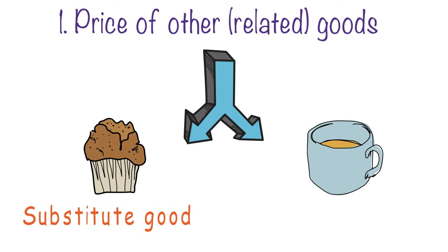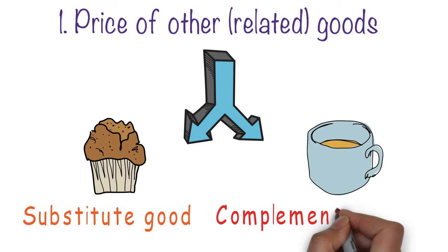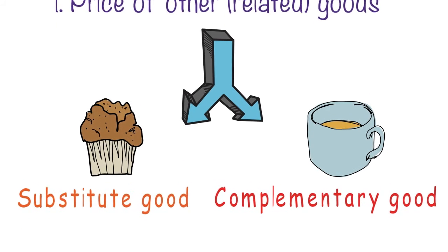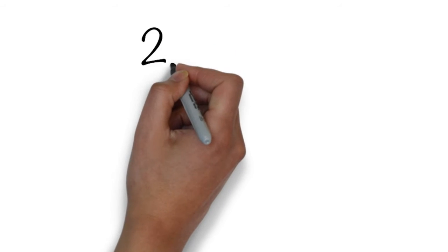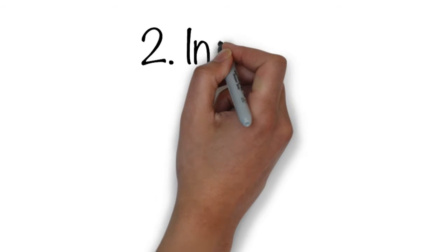The other type of good is a complementary good, such as a cup of coffee. A person likes to drink coffee with their donut, so a decrease in the price of the complementary product will increase the demand for the donut — that will be a shift rightwards in the demand for a donut.